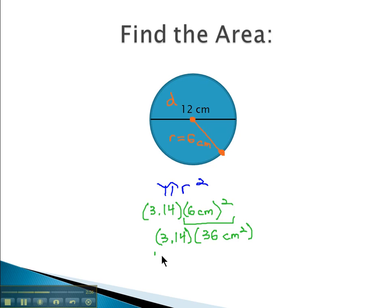Now, we can find our area by multiplying 3.14, or pi, times the 36 centimeters in our circle, and we end up with 113.04 centimeters squared for the area of the circle.